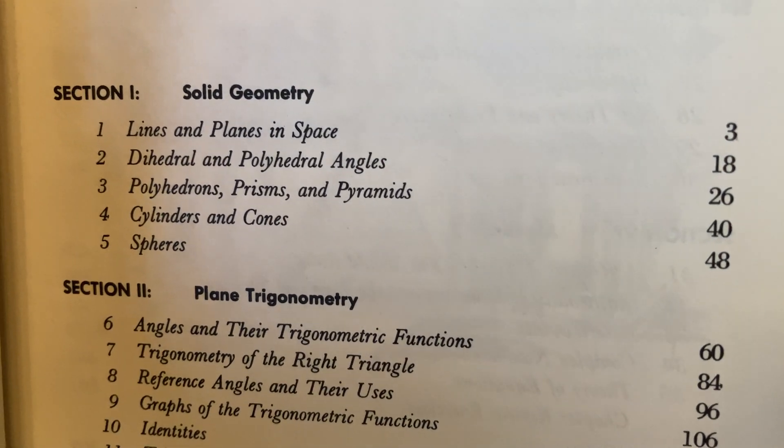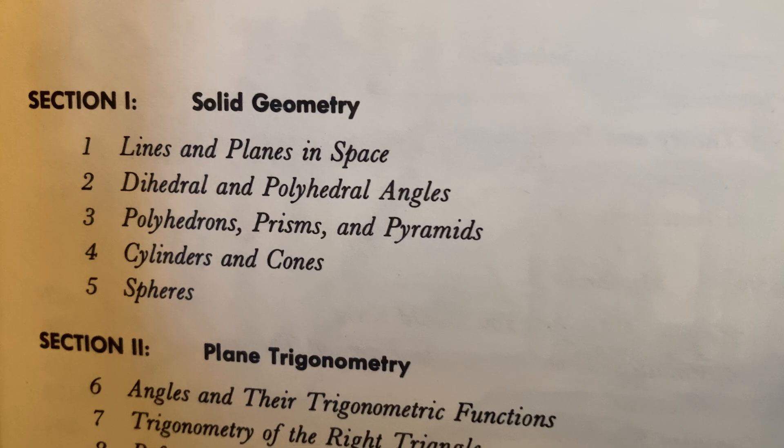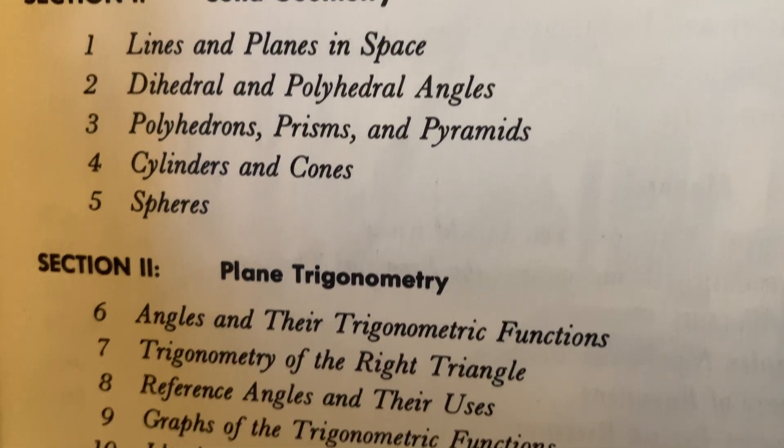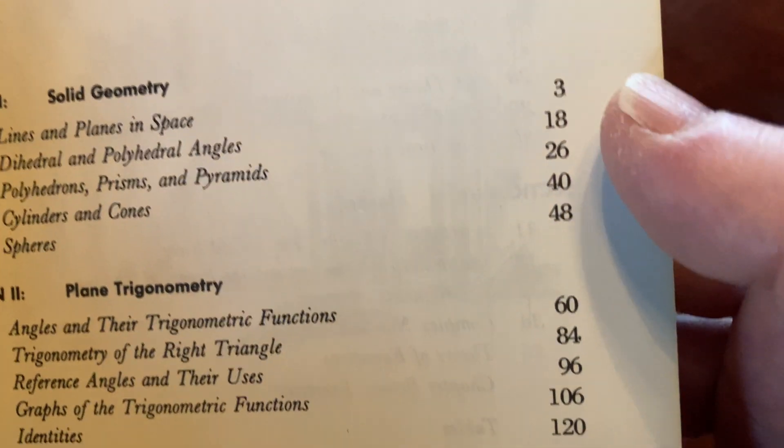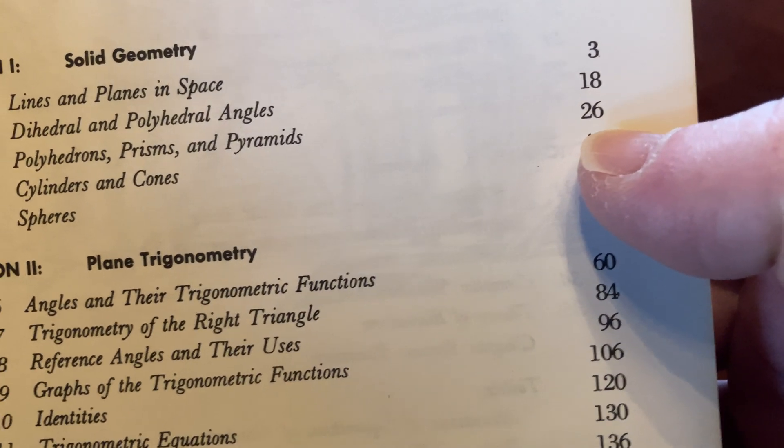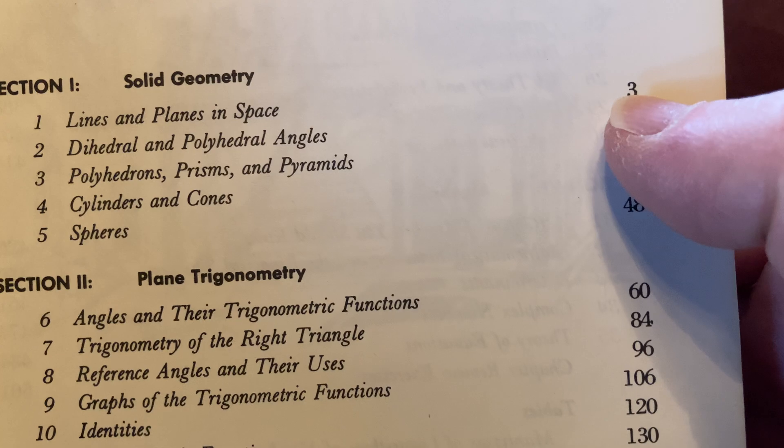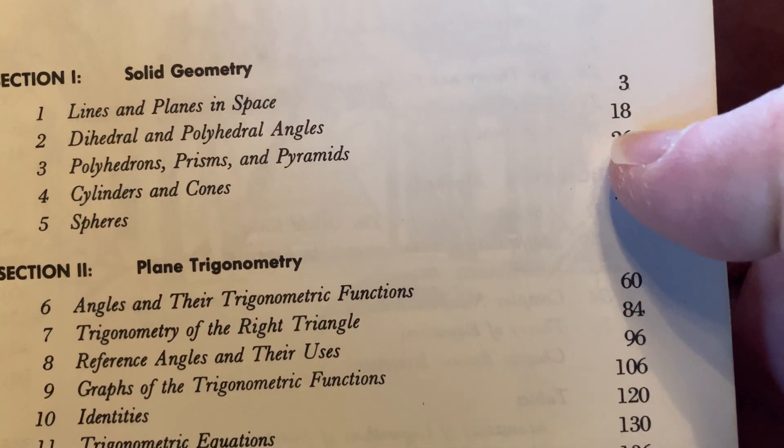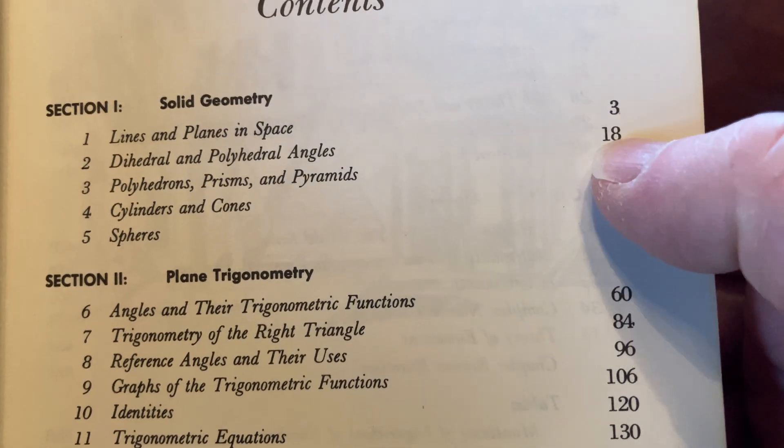Here's the contents. It starts with solid geometry, lines and planes in space, cylinders and cones, spheres. It does spend some time on these topics too. Notice the page numbers. A lot of times you can tell how dense a book is by looking at the gap between the pages, so 3 to 18. That's quite a few pages. You can tell it's a really tough book when it's like 3, 5, 7, 9, or at least they've separated it into lots of little sections.